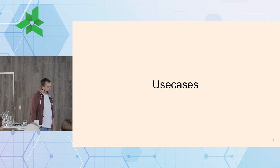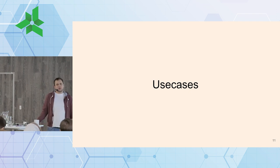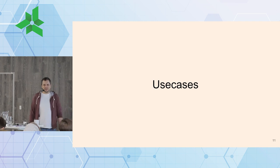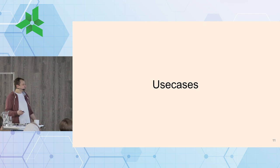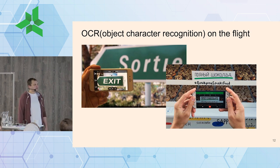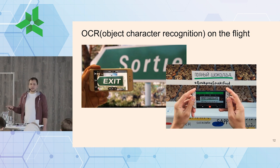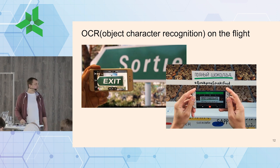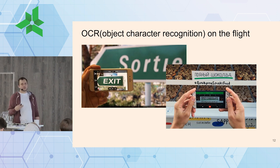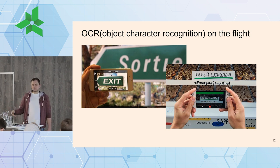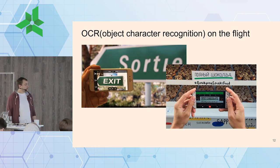Let's talk about use cases — why do we need this? The most well-known use case is on-the-fly translation. Google Translate's app lets you take a photo of text and it translates it in real time. For example, if you're in Germany and don't know German, you can photograph a sign and get a translation in Ukrainian or English — though English tends to work much better.